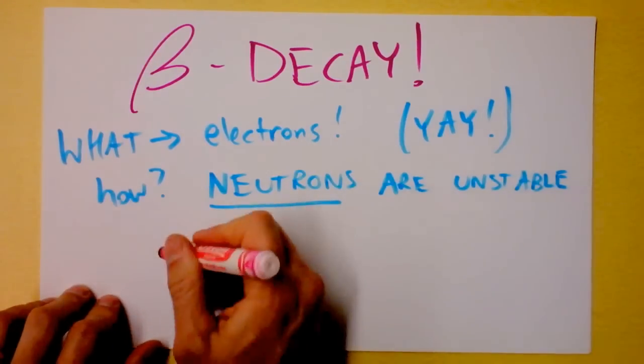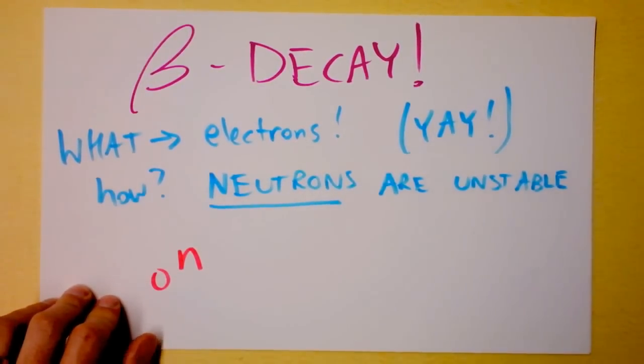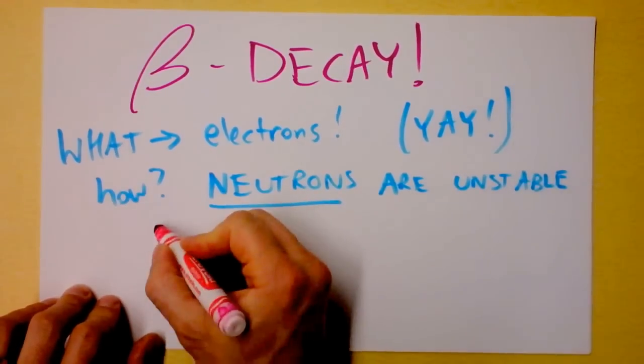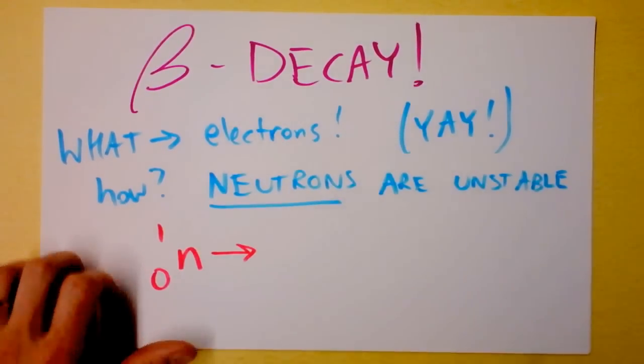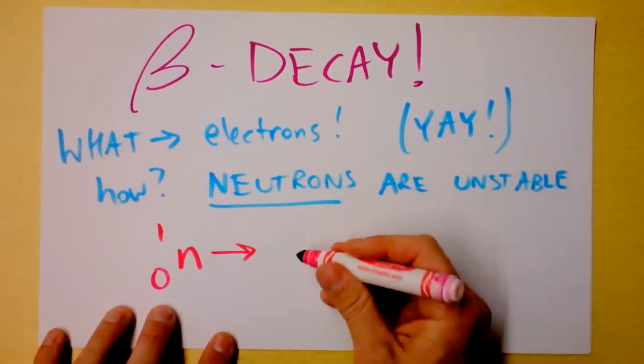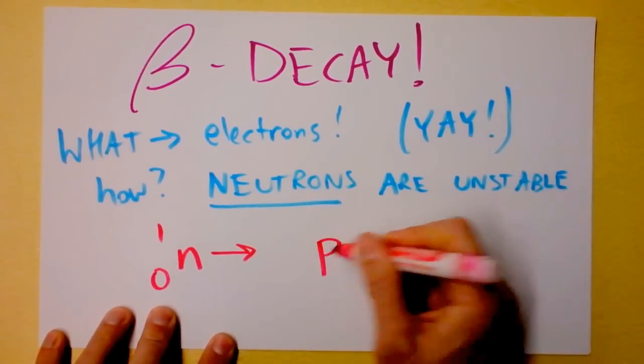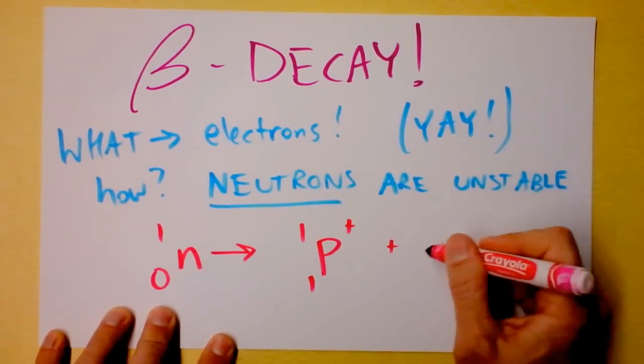So what you've got is a neutron that has zero protons in it. And one atomic mass number turns into, you want to guess what it turns into? Well, what's the charge of a neutron? I guess zero. So it has to turn into something that has a net charge of zero. So watch this.